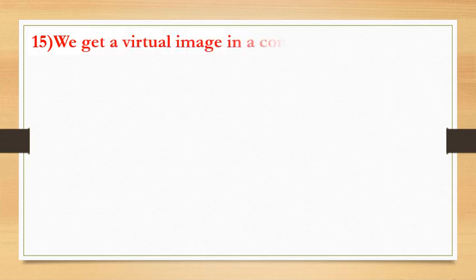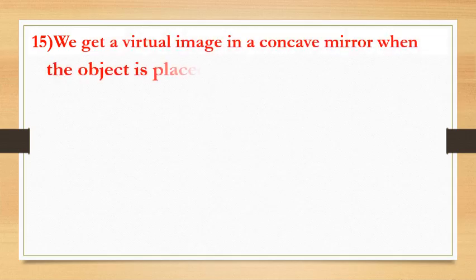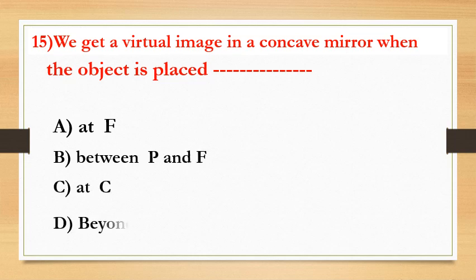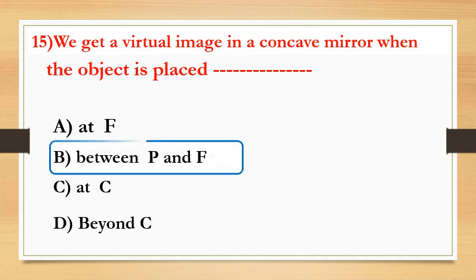We get a virtual image in a concave mirror when the object is placed — it is a very special case. Options are: at F, between P and F, at C, or behind C. The answer is between P and F. Observe the picture.